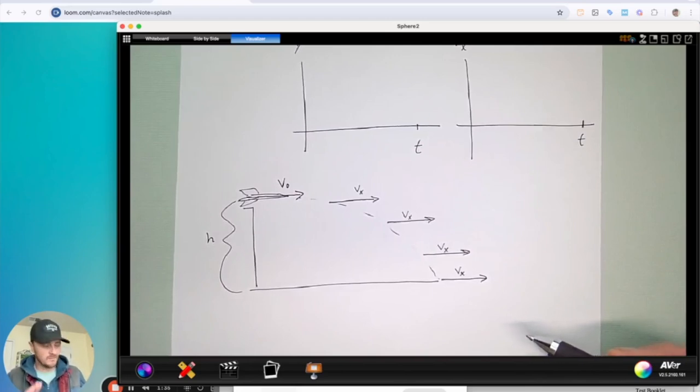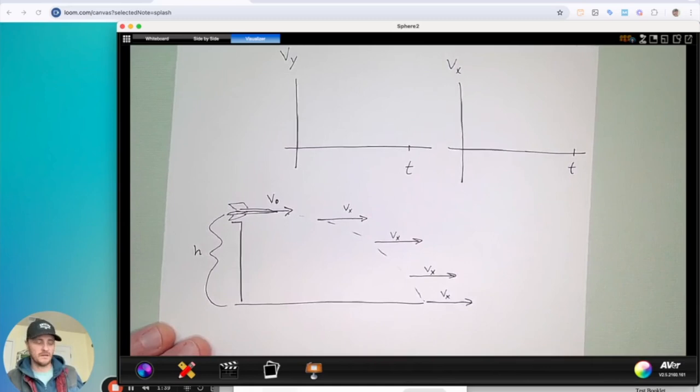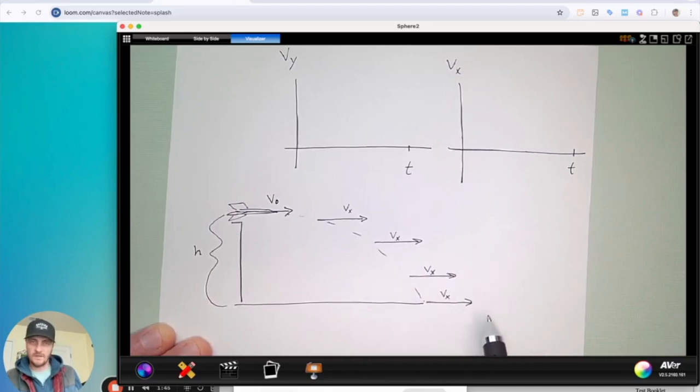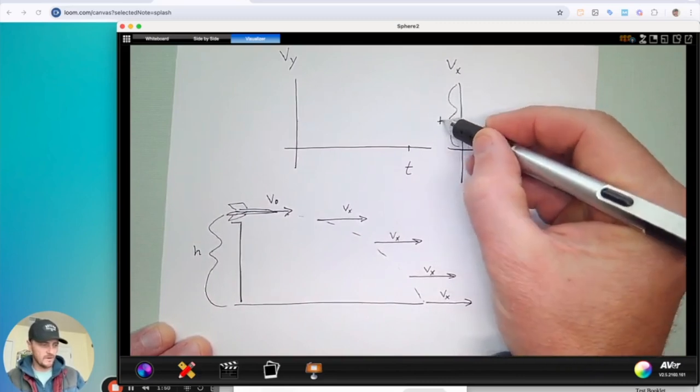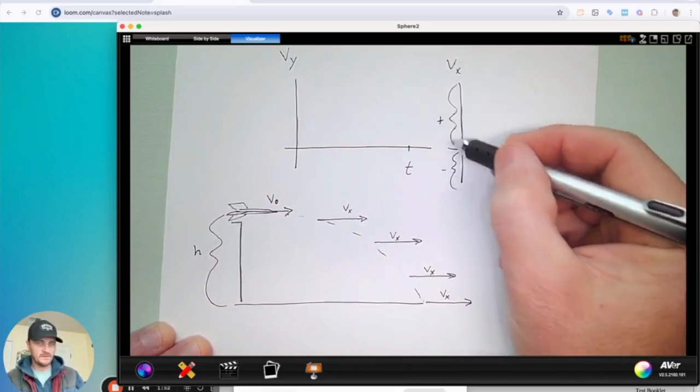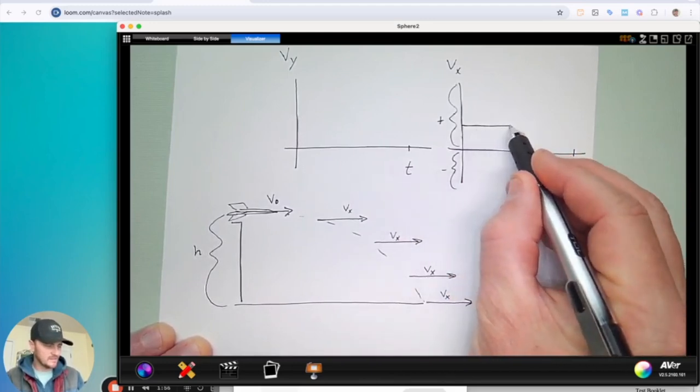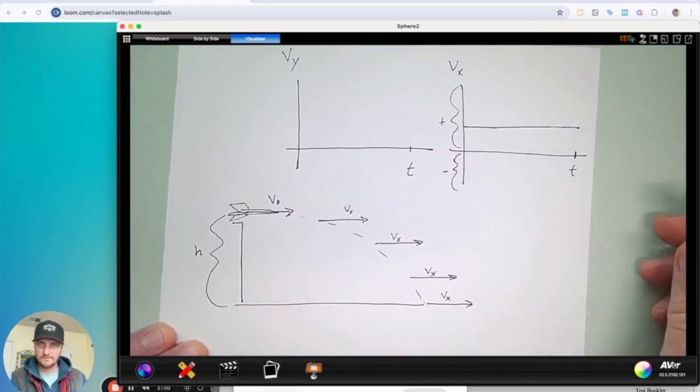And this is simply because there's no acceleration in the x-axis. All the acceleration is in the y-axis. So it will start to speed up in the y, but in the x, there's no unbalanced force to make it go faster or slower. You might say, well, air resistance, but again, these are idealized situations. We're not looking at things like air resistance unless they ask us for that.